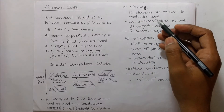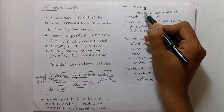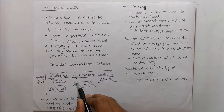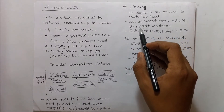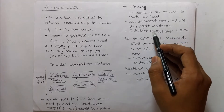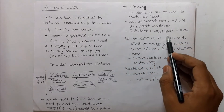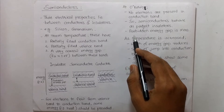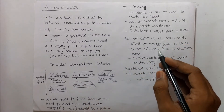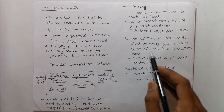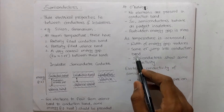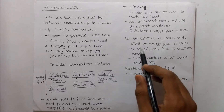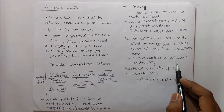In terms of temperature, at 0 Kelvin no electrons are present in the conduction band, so semiconductors behave as perfect insulators. The forbidden energy gap is largest at 0 Kelvin. As temperature is increased, the width of the energy gap reduces, some electrons jump into the conduction band, and semiconductors begin to show some conductivity.